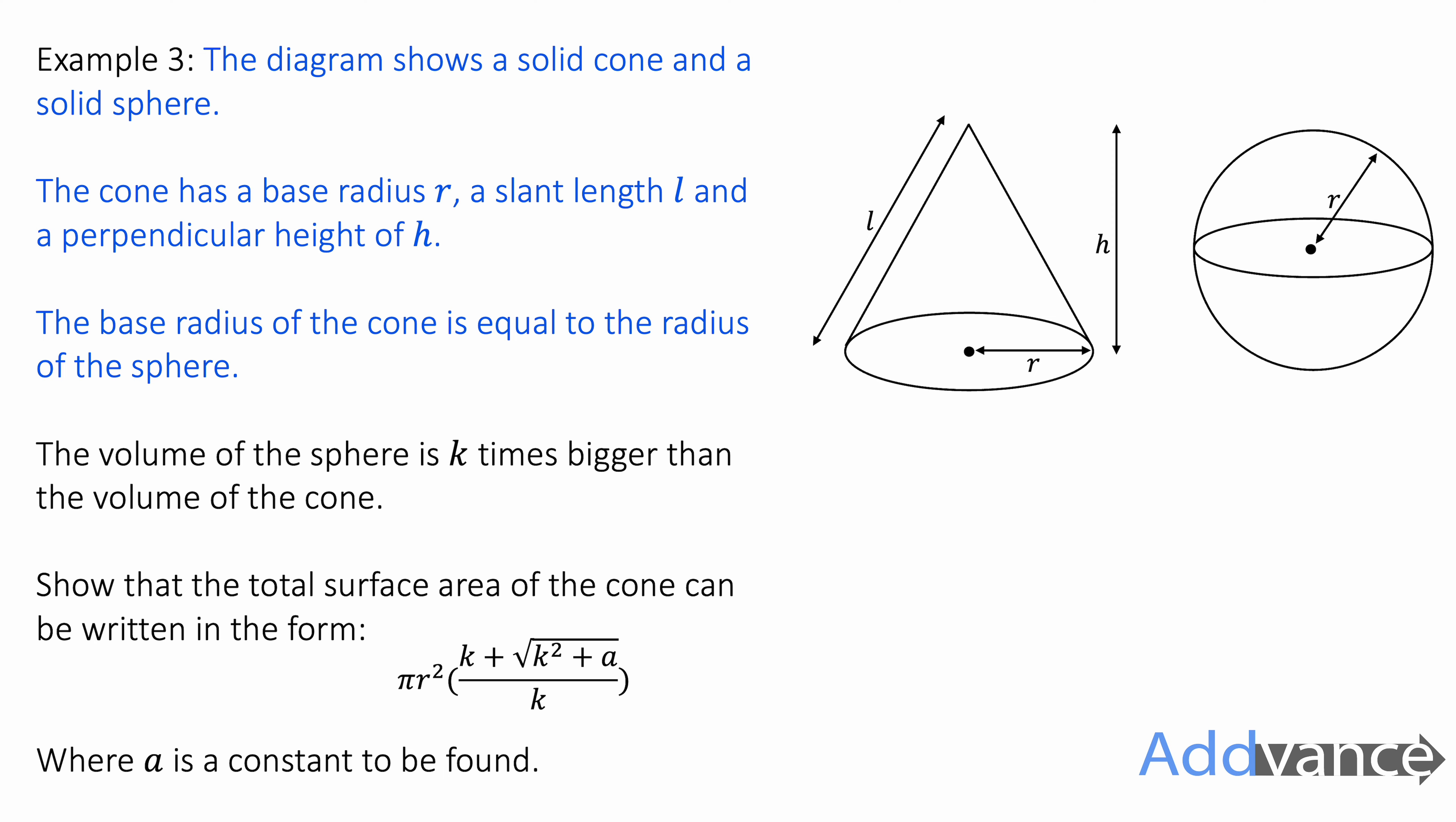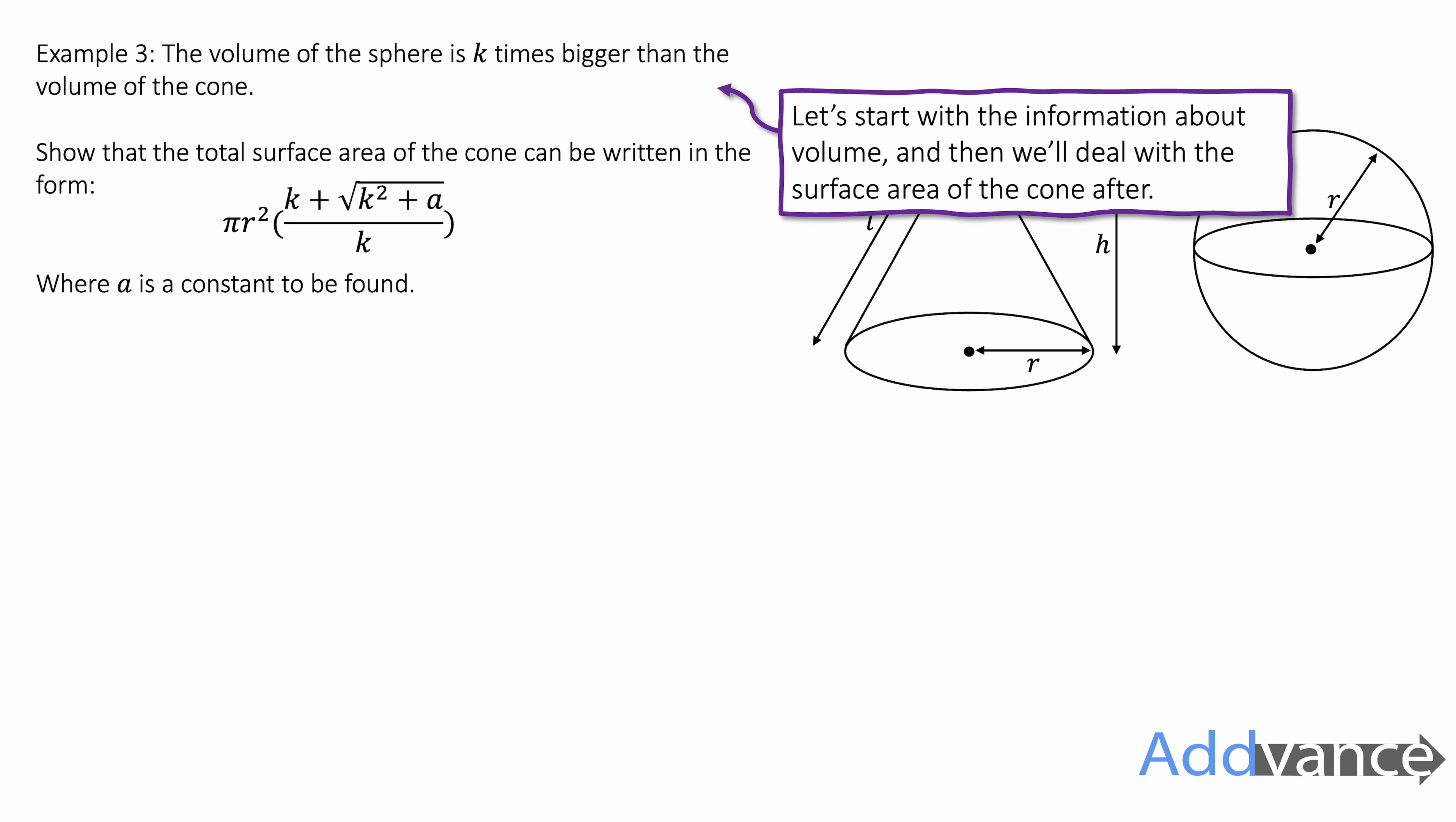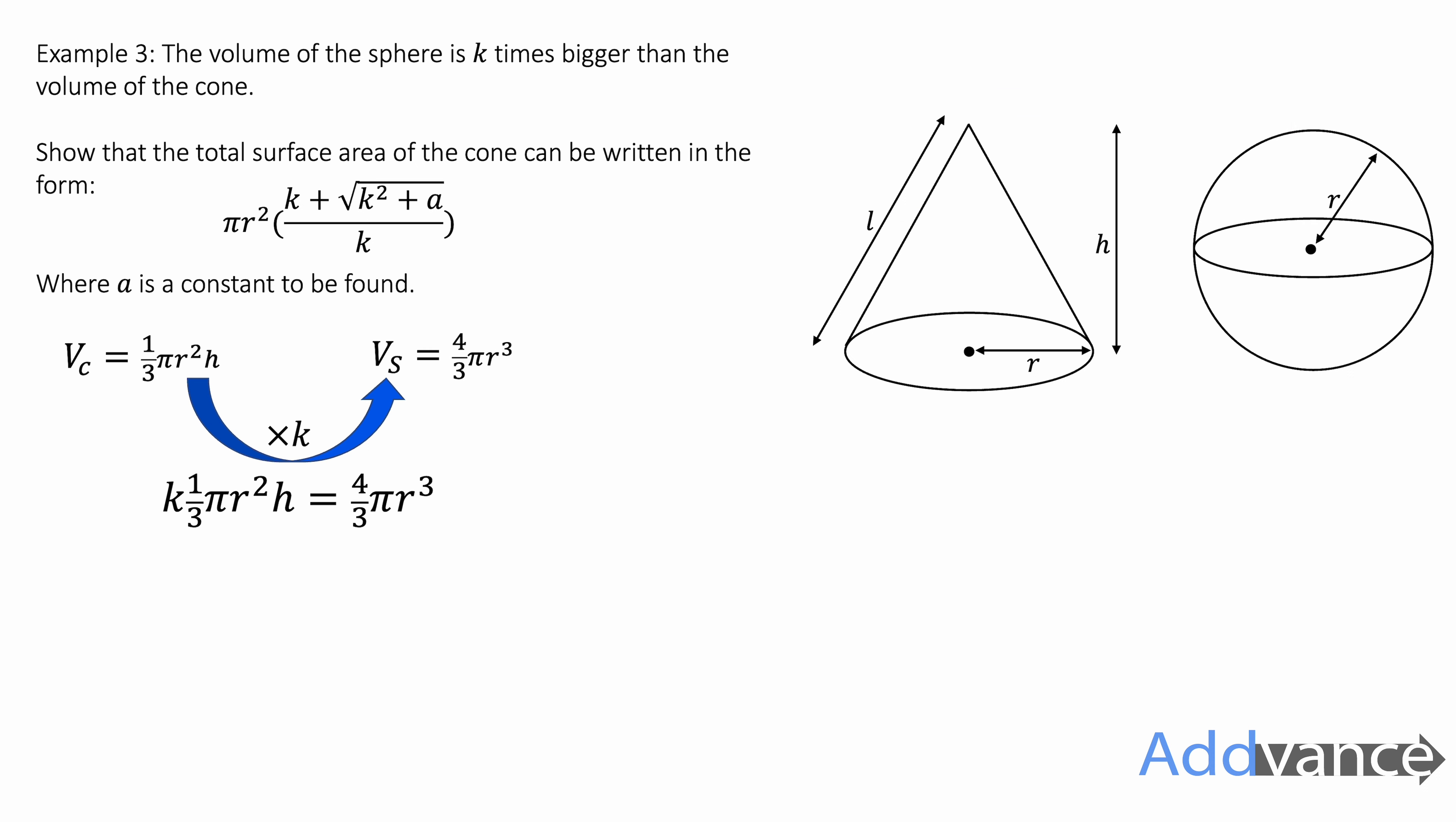All this jibber-jabber here we can ignore. Now, we're going to focus on the volume of the sphere and the volume of the cone, which are given by these equations here. The volume of the cone is one-third pi r squared h and the volume of the sphere is four-thirds pi r cubed. And we know that the volume of the sphere is k times the volume of the cone. So we multiply the volume of the cone by k to find the volume of the sphere and we get this equation here. We can get rid of the divide by three by multiplying by three. We can get rid of the multiply by pi by dividing by pi on both sides. And so you see how we're simplifying this equation by cancelling out the things that are the same on both sides.